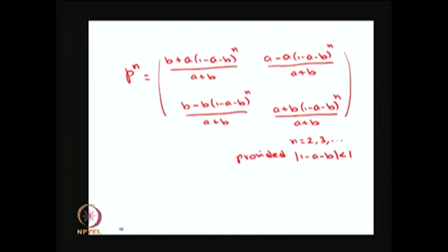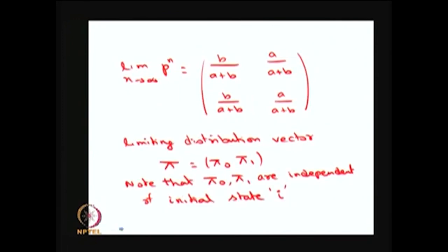Here I am directly giving the P^n values matrix, which consists of 4 elements as functions of A, B, and n. This exists provided the absolute value of 1 minus A minus B is less than 1; otherwise P^n would not exist. As n tends to infinity, the limiting matrix is again a stochastic matrix because the row sums equal 1 and all elements are greater than or equal to 0. Therefore, if the limiting probability matrix exists, it is unique, and all rows are identical.